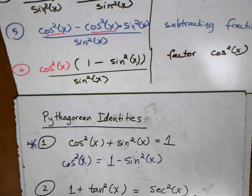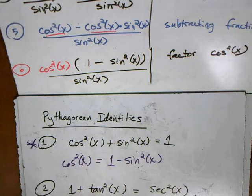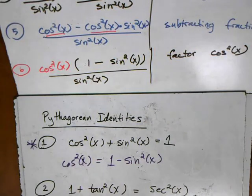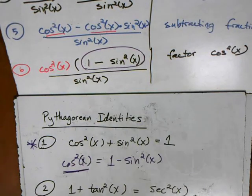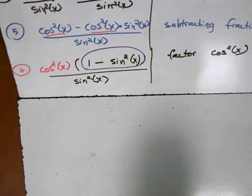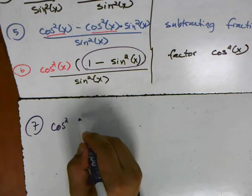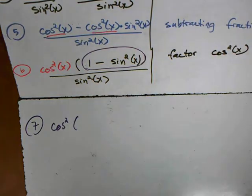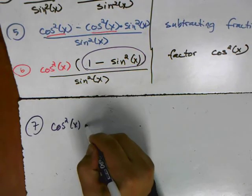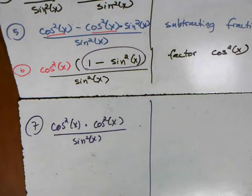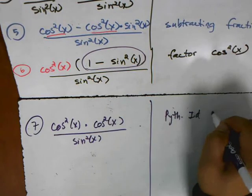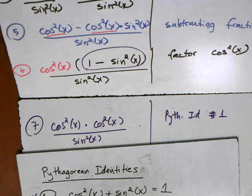It's hard at first to see these connections, but this is something you have to work on. The more you do it, the easier it will be to identify this as a rewriting of the first Pythagorean identity. So I am going to continue this proof and replace the entire expression one minus sine squared with cosine squared. In my next step, I have cosine squared times cosine squared of x, all of it divided by sine squared. My reason here is the Pythagorean identity — specifically the first one.